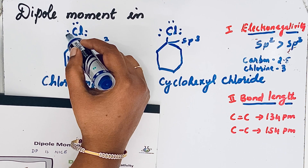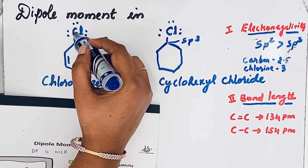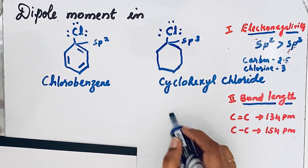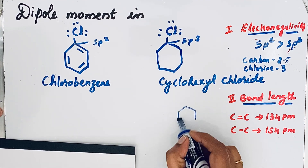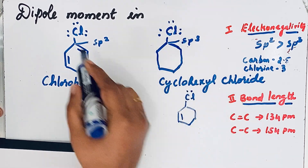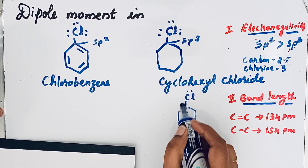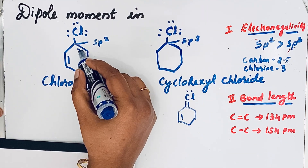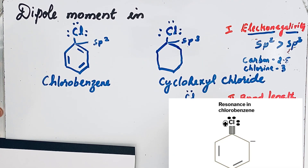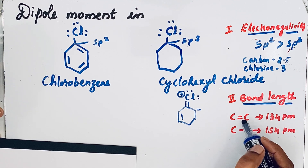The second factor is bond length. Due to the lone pair on the chlorine atom in chlorobenzene, resonance occurs — the lone pair forms a double bond with the ring, the existing double bond breaks, and a negative charge develops over the ortho position while the carbon bonded to chlorine becomes positive. This resonance shortens the C–Cl bond length.